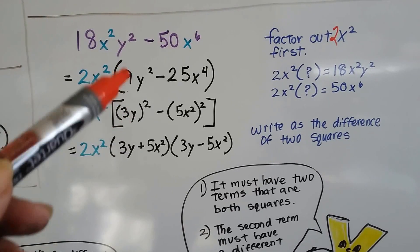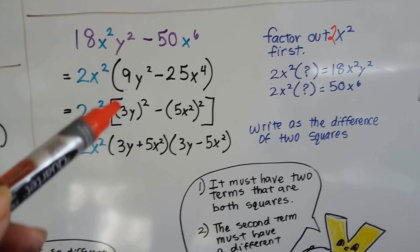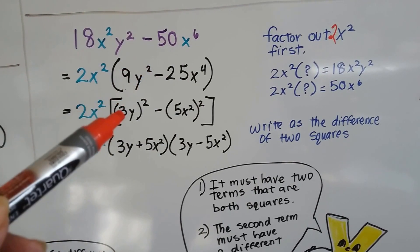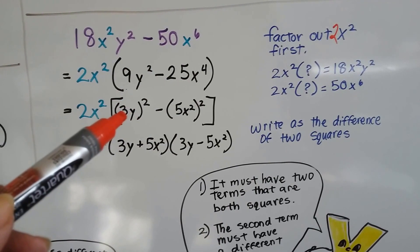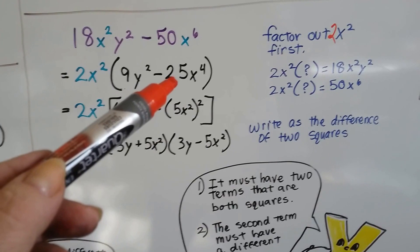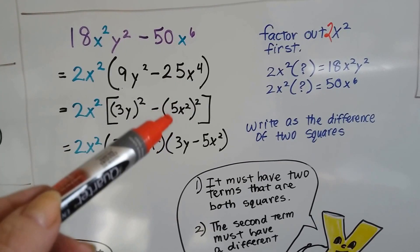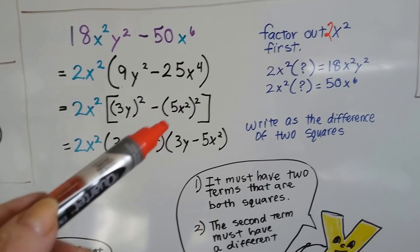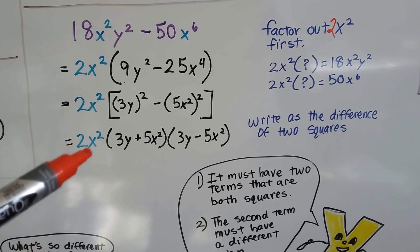So now, we can break these down. What times what would be 9y²? It would be 3y times 3y. And what times what would be 25x^4? It would be 5x² times 5x².